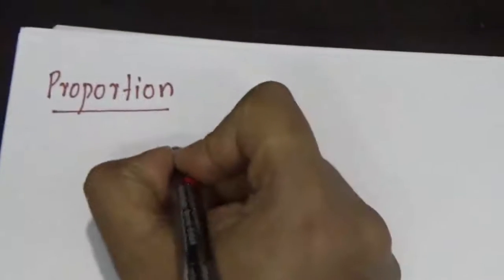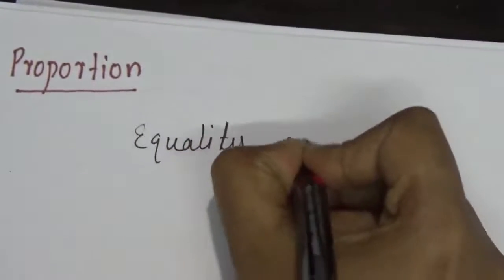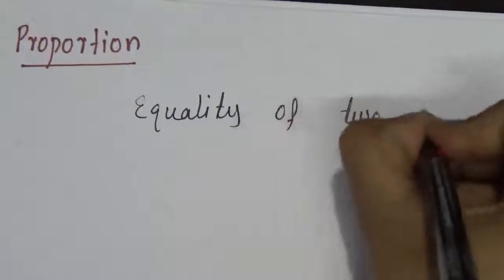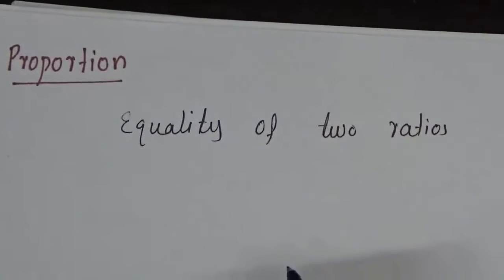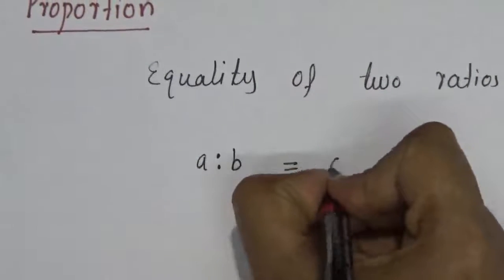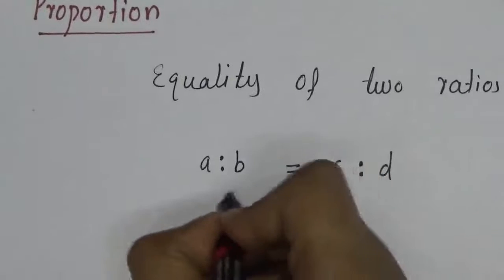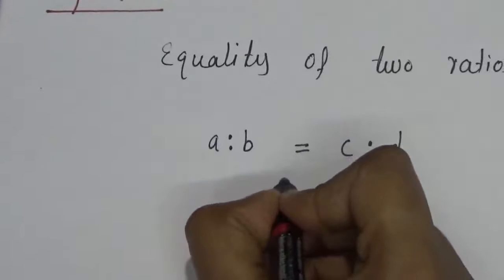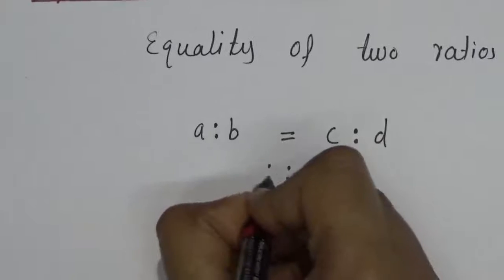Proportion. An equality of two ratios is called proportion — equality of two ratios. Two ratios are called proportion. Suppose A is to B is equal to C is to D. Instead of the equal-to sign you can write the proportion symbol, so that means A is to B is to C is to D.